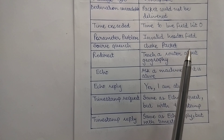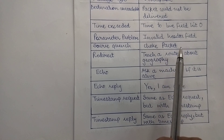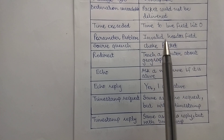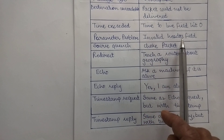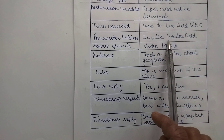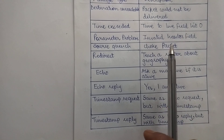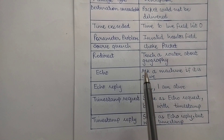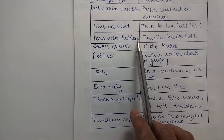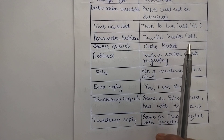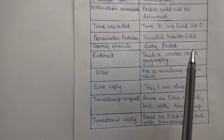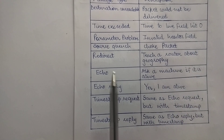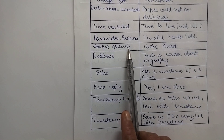The next message is 'Parameter Problem.' This message indicates that an illegal value has been detected in the header field. The header field contains the source address, destination address, and some other control information. If it contains bits or information that should not be there — an invalid or illegal value — the parameter problem message is generated. This basically indicates a bug in the sending host's IP software or possibly in the software of a router in transit.